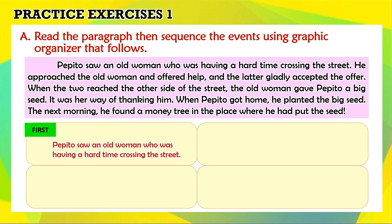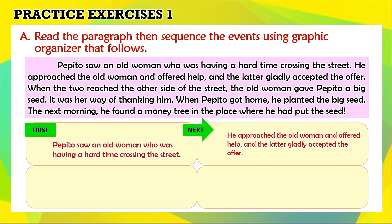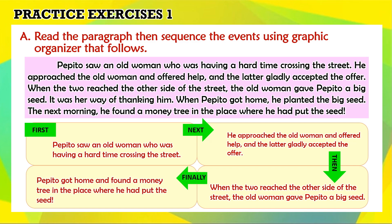First, Pepito saw an old woman who was having a hard time crossing the street. Next, he approached the old woman and offered help, and the latter gladly accepted the offer. Then, when the two reached the other side, the old woman gave Pepito a big seed. Finally, Pepito got home and found a money tree in the place where he had put the seed.